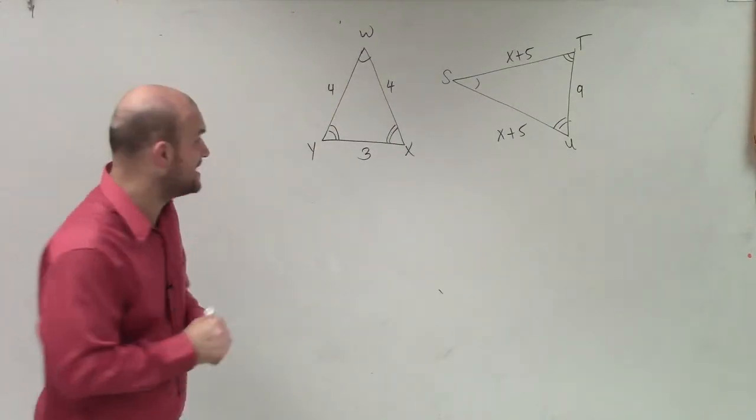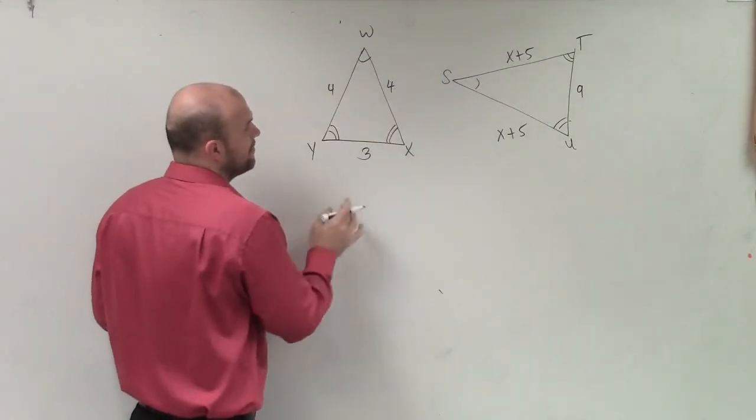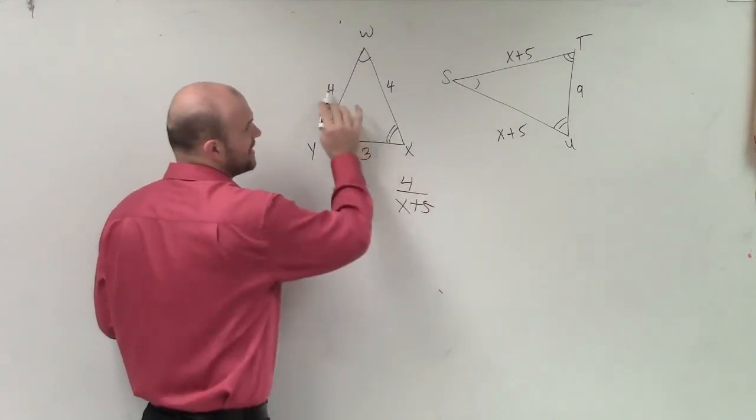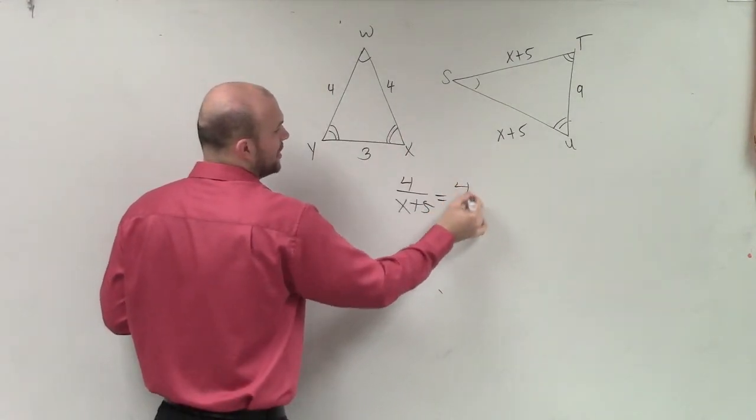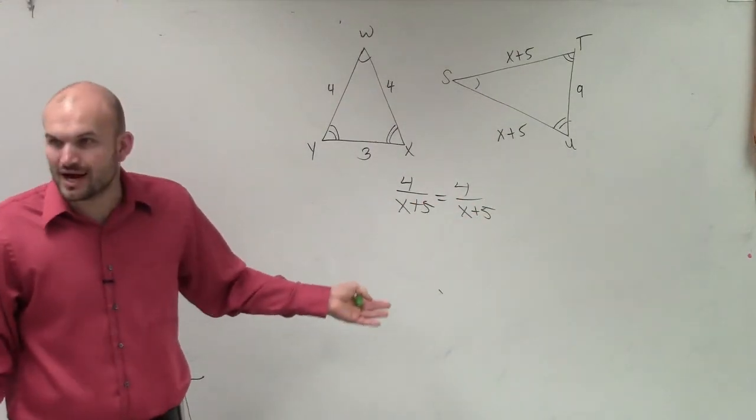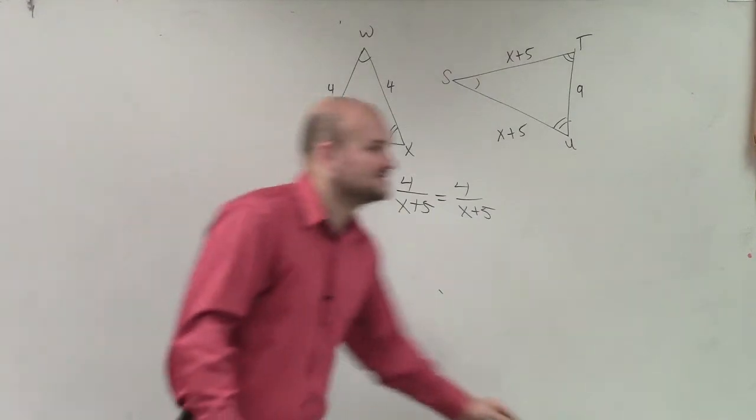Now, one thing we don't want to make a mistake on - we don't want to set a proportion as 4 is to x plus 5, and then 4 is to x plus 5, because those are equal to each other. That's not going to help you solve for x, so don't make that mistake.